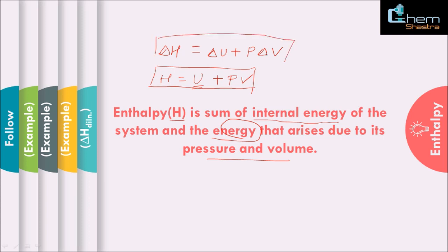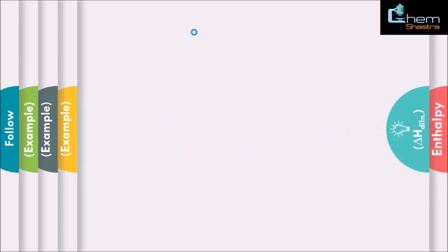This expression is what we are interested in and what we are going to use. When we talk about enthalpy of dilution, we are not going to measure enthalpy H directly, because determining absolute enthalpy is practically impossible. What we can determine is the change in enthalpy. That is why the enthalpy of dilution we are going to discuss is basically a change in enthalpy — delta H — and not enthalpy itself.